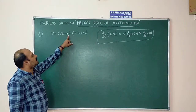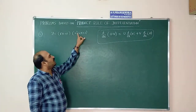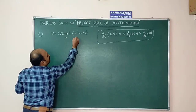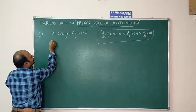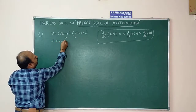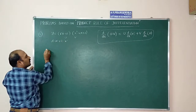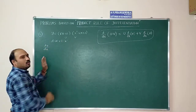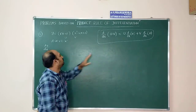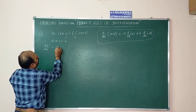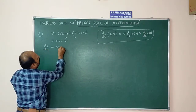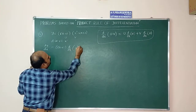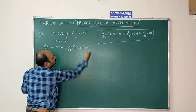Next question: y = (√x + 1)(x² - 4x + 2). The first function is u = (√x + 1) and the second function is v = (x² - 4x + 2). Differentiate with respect to x using the product rule.